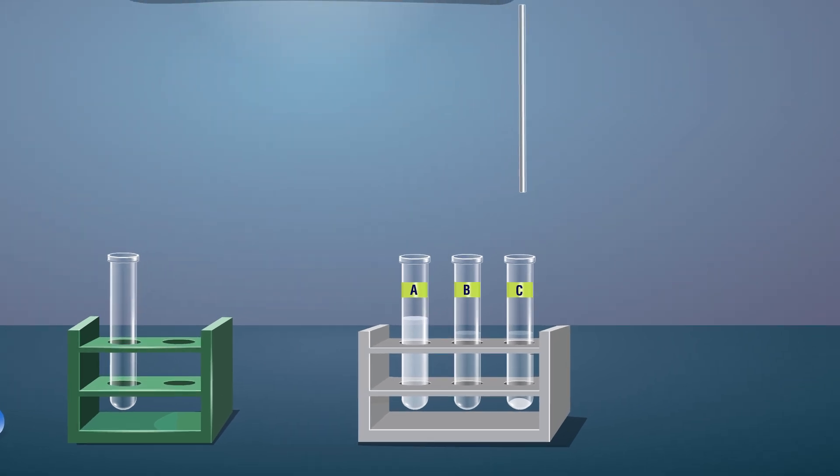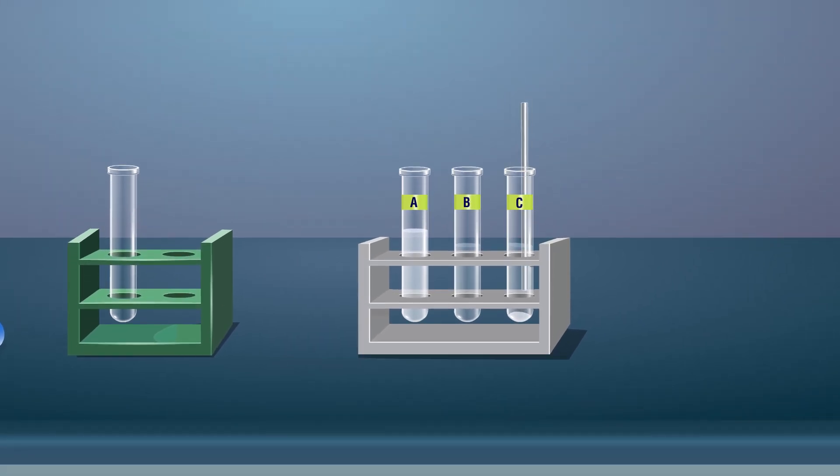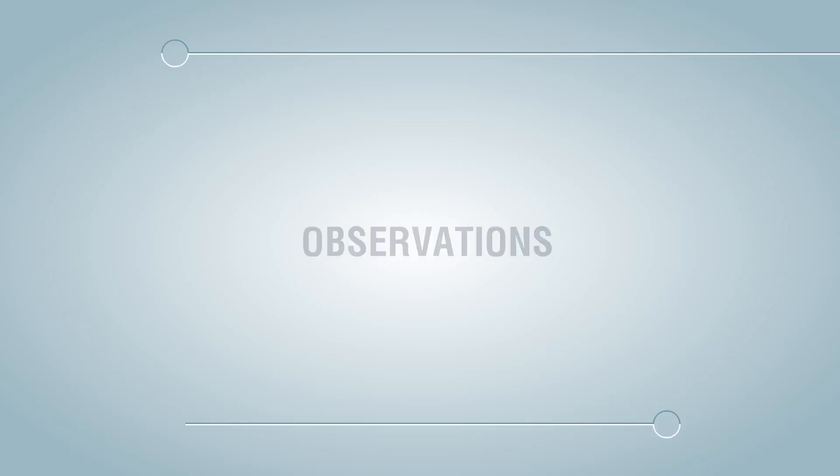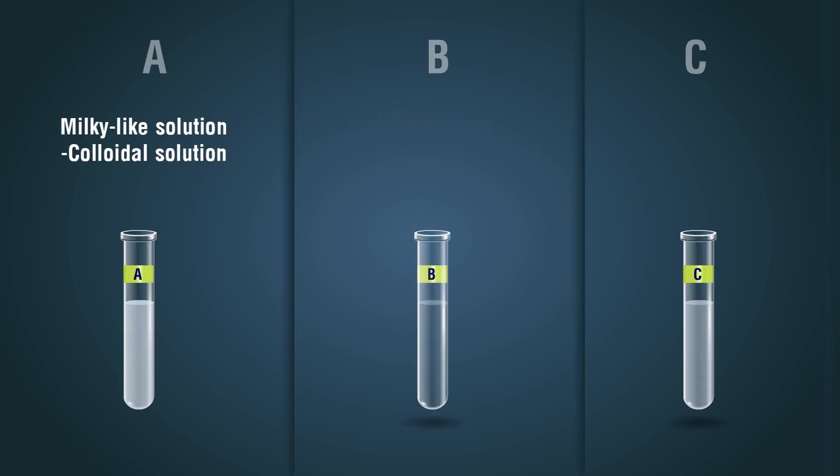Stir the mixture with the help of a glass rod. Label this boiling tube as tube C. Observations: transparency.